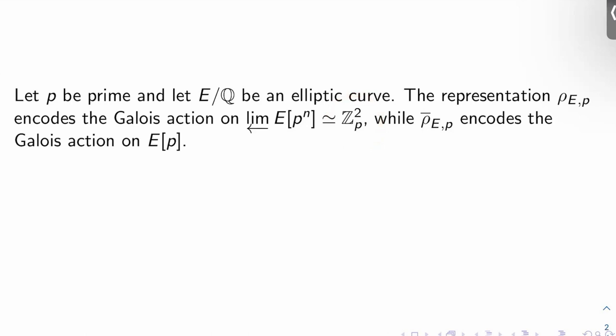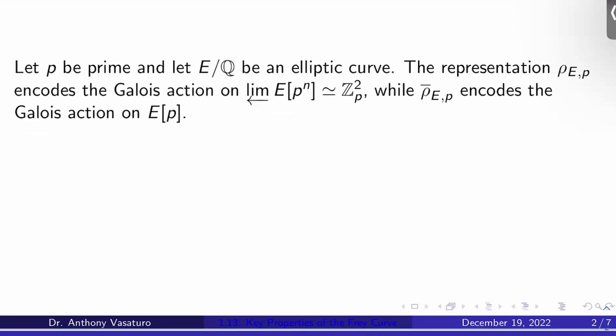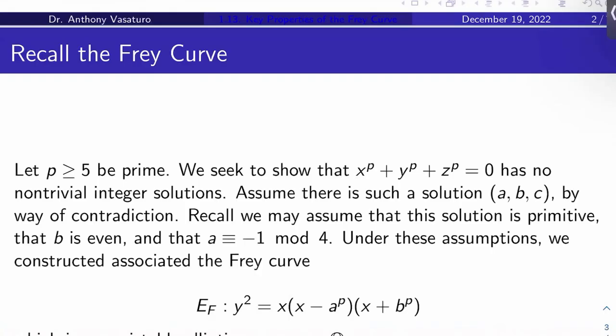And then ρ̄_E,P, which is the mod P residual representation attached to ρ_E,P, just encodes the Galois action on the P torsion of E by itself. Okay, let's also recall the Frey curve setup. Let's let P be a prime that's at least five.